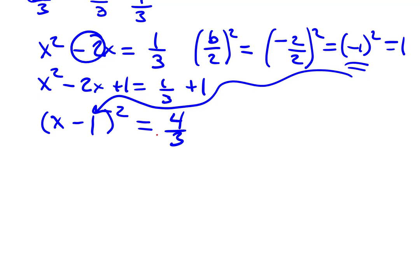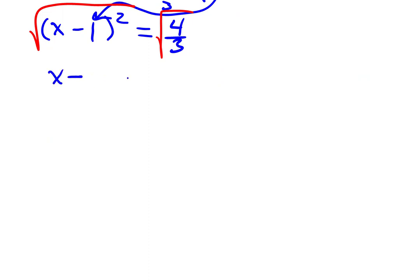Then we'll unsquare, or in other words, square root both sides. This will give us x - 1 = ±2/√3. Now, to get x alone, of course, we'll add 1 to both sides and end up with x = 1 ± 2/√3.